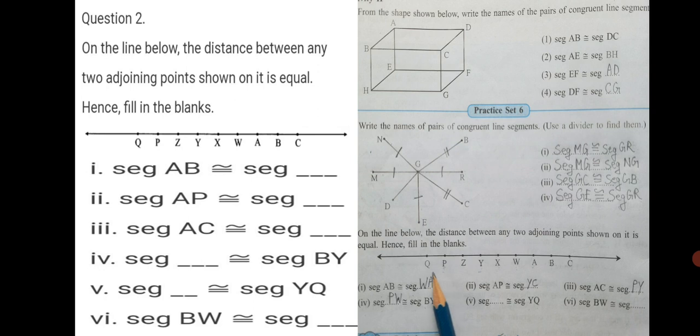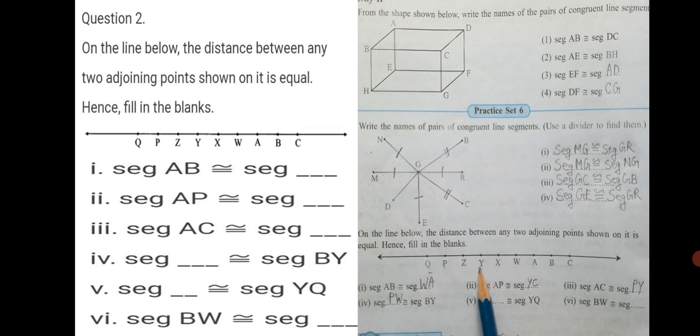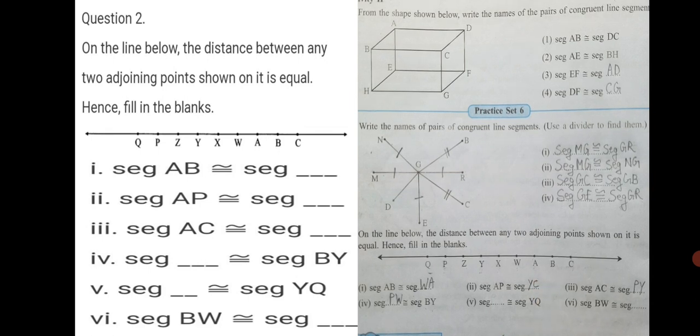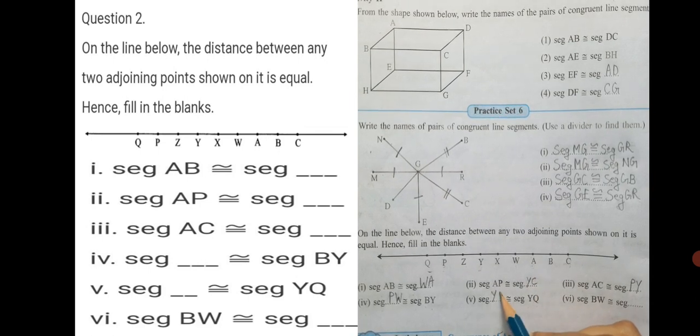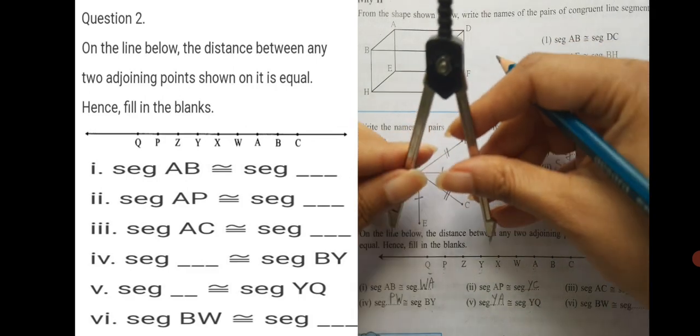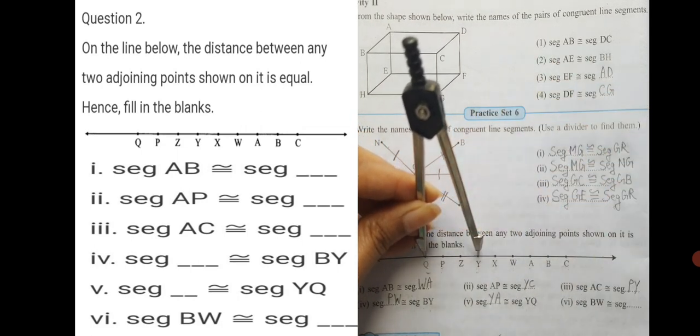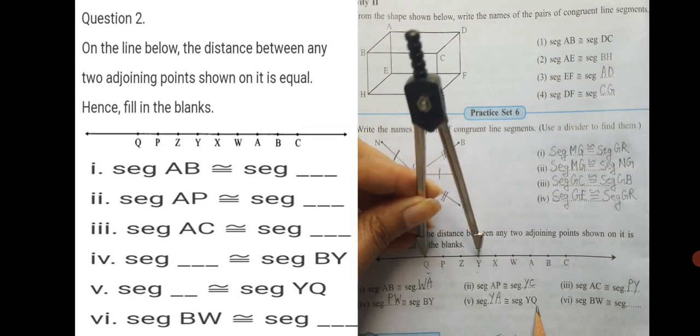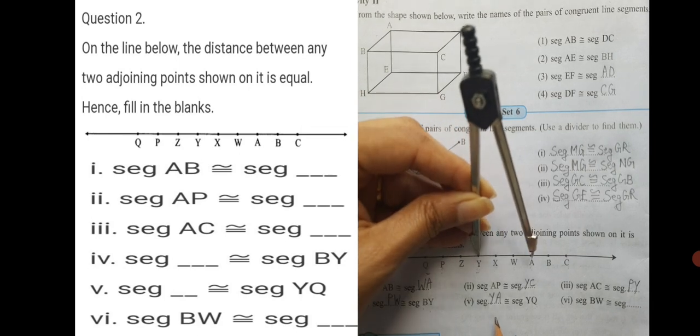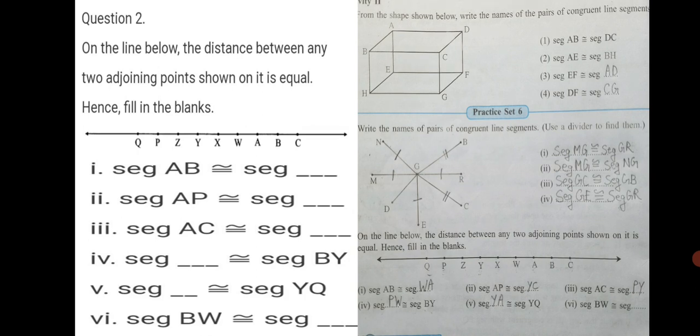YQ. YQ is how many points? Let's check 1, 2, 3, 4. 4 points are covered. Let's mark from Y to other side 4 points. 1, 2, 3, 4. YA. We can say seg YA is congruent to seg YQ. Let me check once with a divider. YQ is this much. Now, I want to check YA. I will keep on Y and see exactly as much as YQ is seg YA.